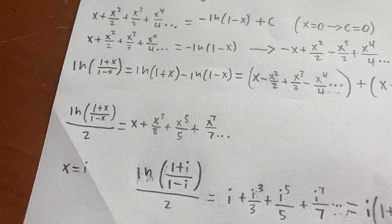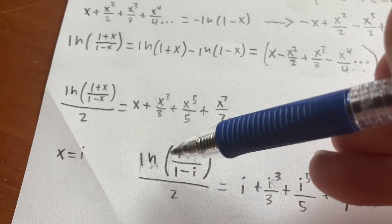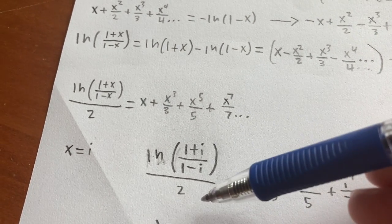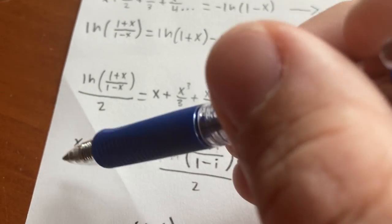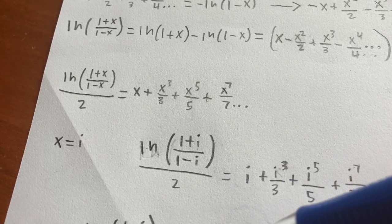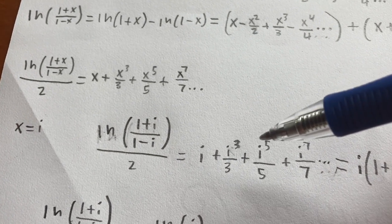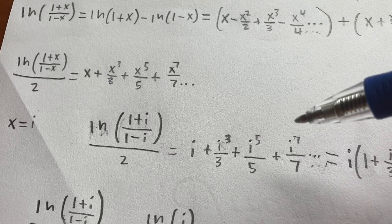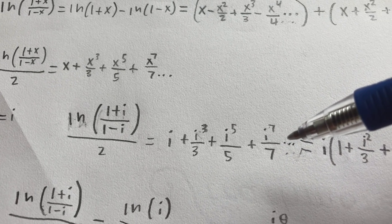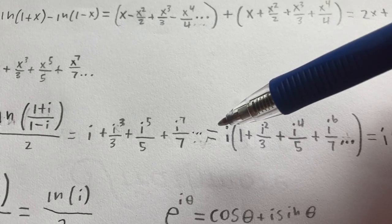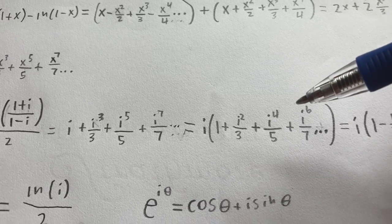Now what is the natural log of 1 plus i divided by 1 minus i, divided by 2, equal to? Well, on one hand, we can use our formula with x equal to i to get that it is equal to i plus i cubed over 3 plus i to the fifth over 5 plus i to the seventh over 7, etc. We can factor out an i from our equation to get i times 1 plus i squared over 3 plus i to the fourth over 5 plus i to the sixth over 7, etc.